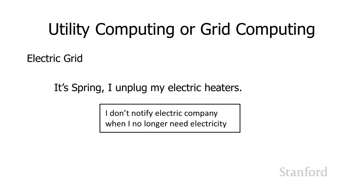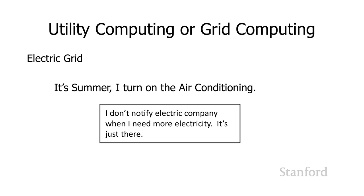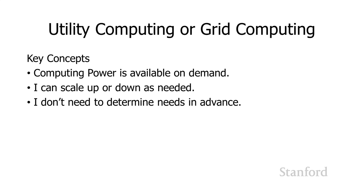When it starts heating up again in spring, I don't need my heaters anymore. I don't call the electric company and say, hey, I don't think I need the heaters anymore, please reduce my bill. My usage goes up and down depending upon the season, and I don't notify the electric company or need to make any special moves. The electricity is just there at the wall when I need it. That's the whole idea behind utility and grid computing — just like electricity is there when I need it, or water when I open the tap, it's a widely available good managed by an external utility company.